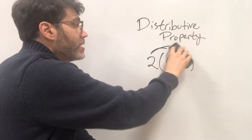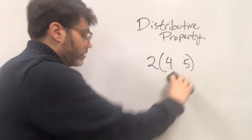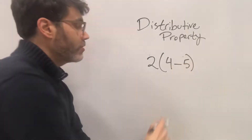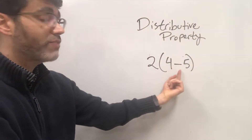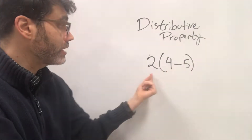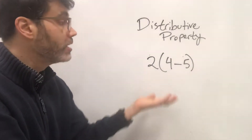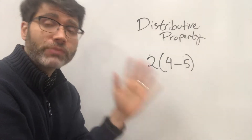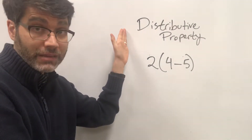Let's say that we had a negative in here — a subtraction sign — 4 minus 5. We do the parentheses first: 4 minus 5 is negative 1. Then we multiply negative 1 times 2, that's negative 2. So this expression is equal to negative 2. Let's see if the distributive property also gives that same answer.